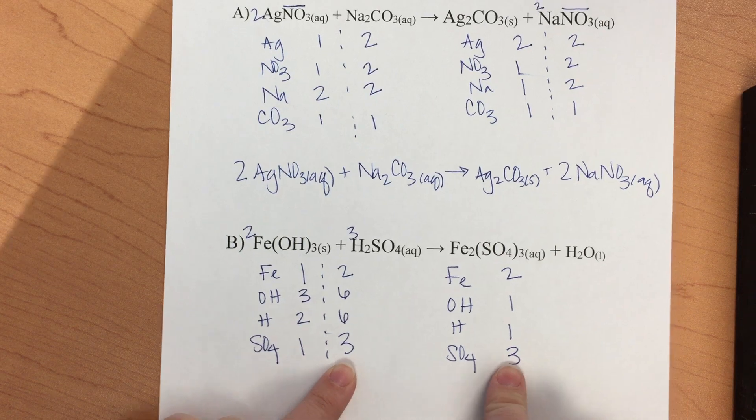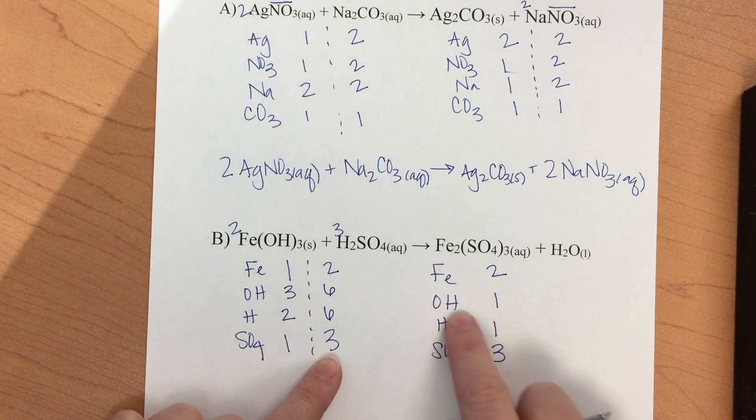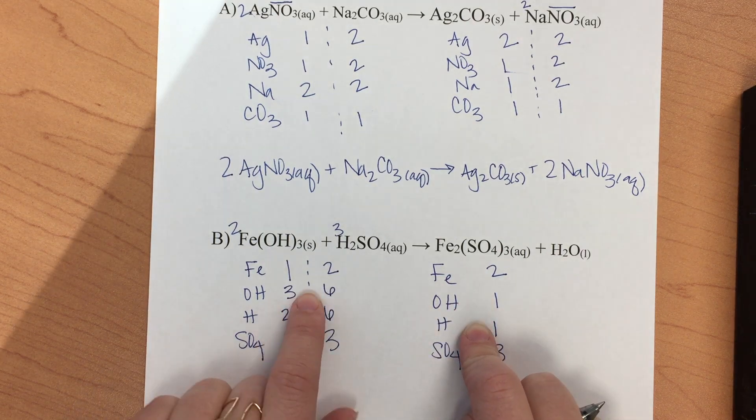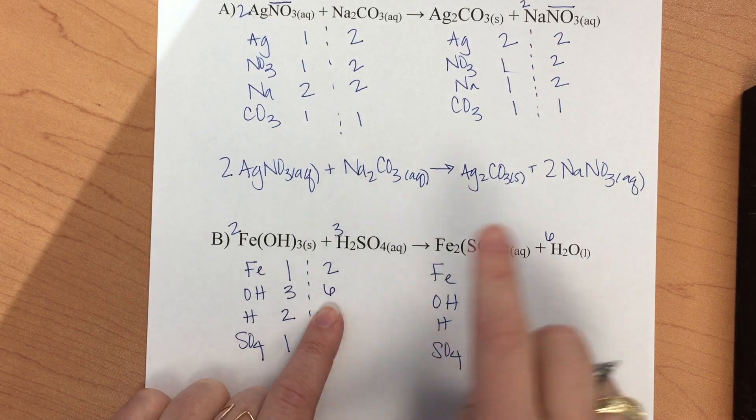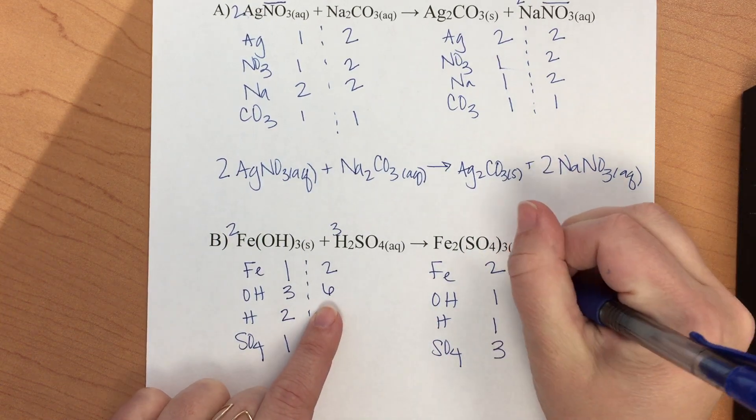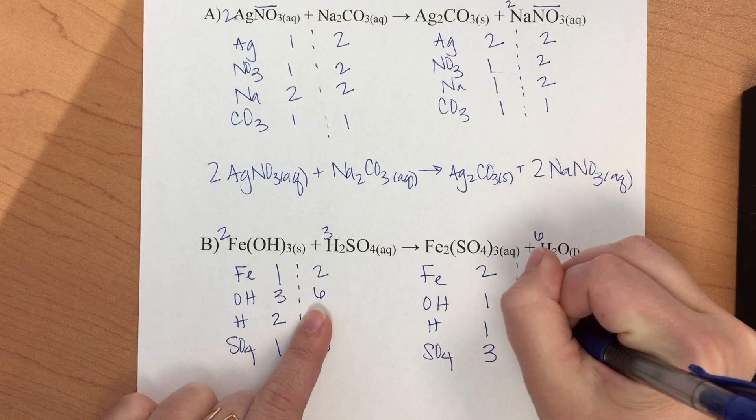If we look at this, we can see that a simple addition of a six in front of the water is going to allow this to balance. We have two of these, a six, six, and a three. So we now have a balanced chemical equation.